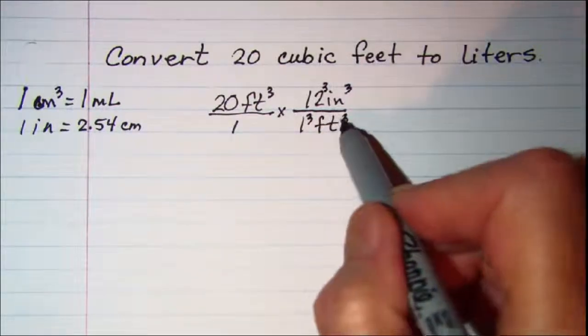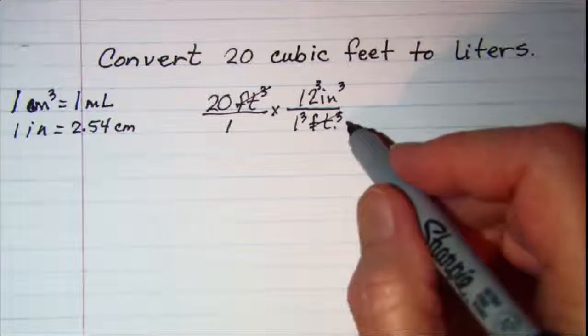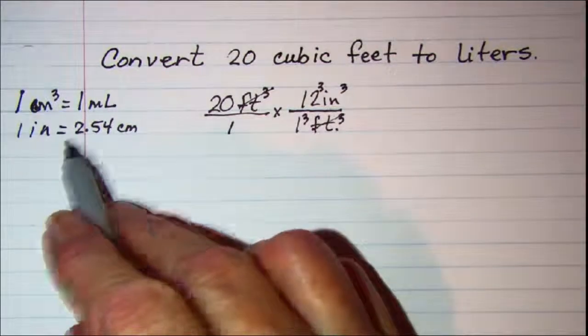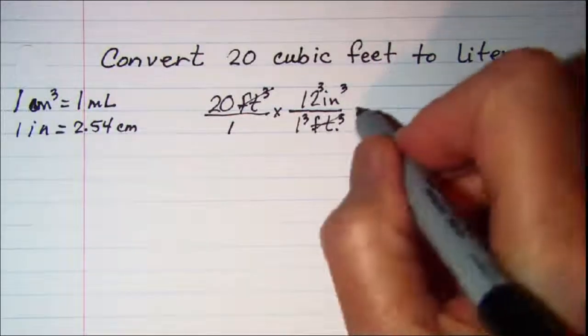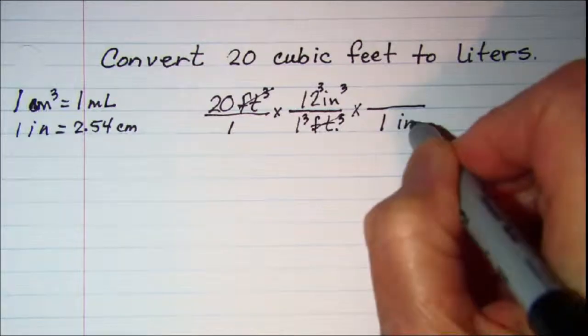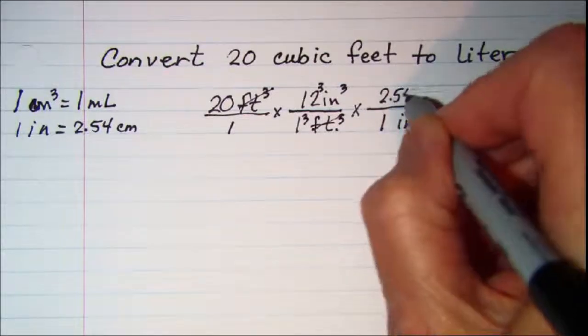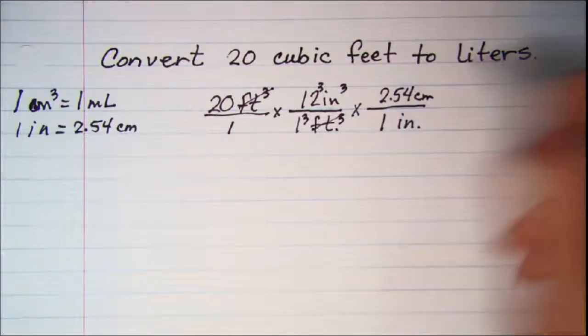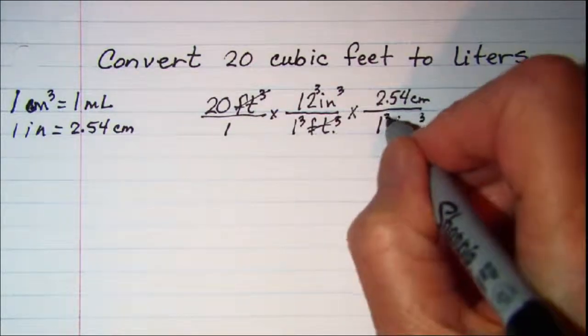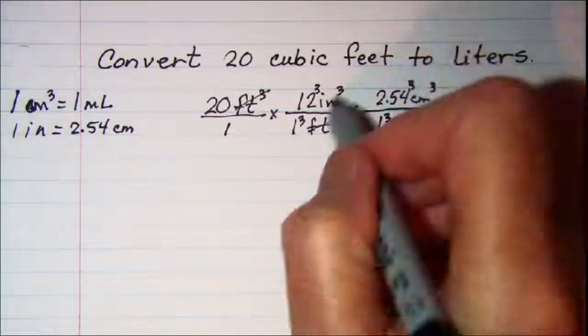So now I have cubic feet in the bottom and cubic feet in the top and I can cancel. Since I now have cubic inches or inches I can make the jump to metric. This 1 inch I will put in the denominator and that is equal to 2.54 centimeters in the numerator. And again I have cubic inches here so I need cubic here.